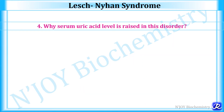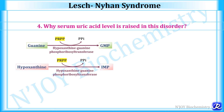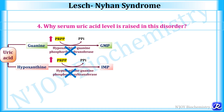Why is serum uric acid raised in this disorder? In the salvage pathway, HGPRTase is important for formation of GMP from guanine and IMP from hypoxanthine. If this enzyme is defective, PRPP (phosphoribosyl pyrophosphate) cannot be utilized. The increased concentration of PRPP leads to more purine synthesis and consequently more purine degradation, resulting in increased serum uric acid — the end product of purine degradation. Additionally, guanine and hypoxanthine levels are also increased, leading to more uric acid production.